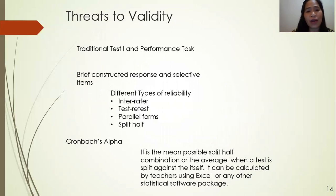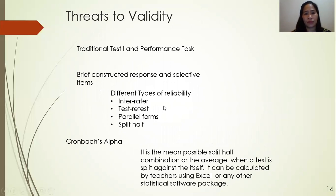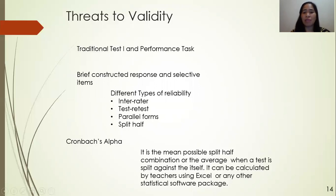The following are defects in the construction of assessment tasks which can make assessment inferences inaccurate: inter-rater, test-retest, parallel forms, and split-half. The Cronbach alpha is the mean of all possible split-half combinations, or the average when a test is split against itself. It can be calculated by teachers using Excel or any other statistical software package.